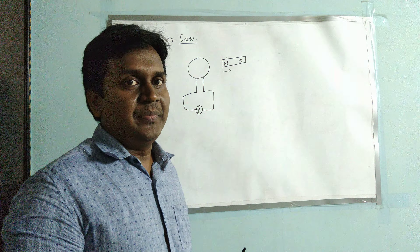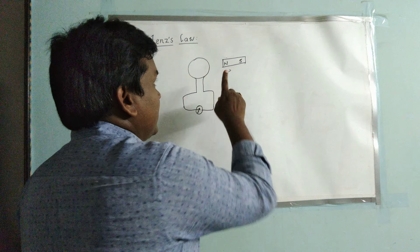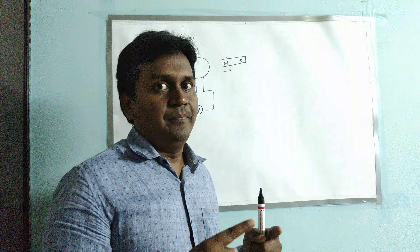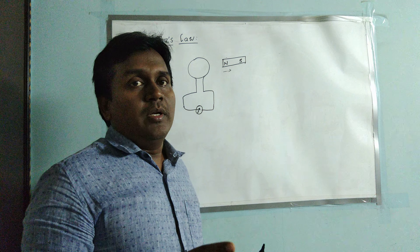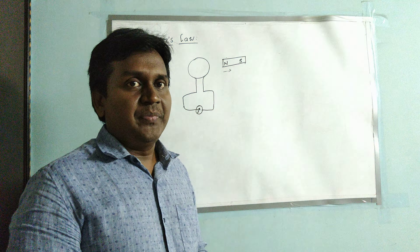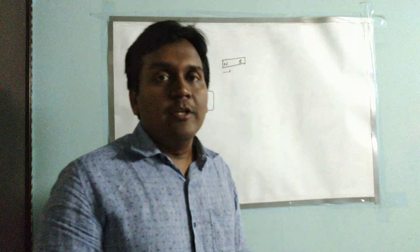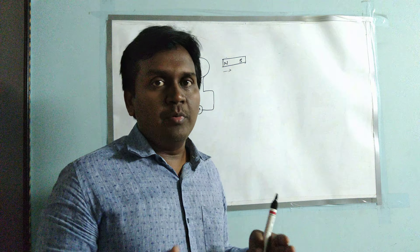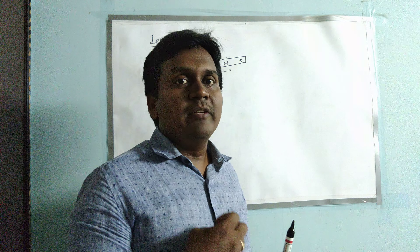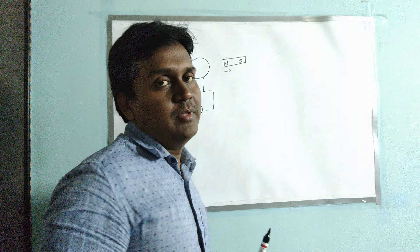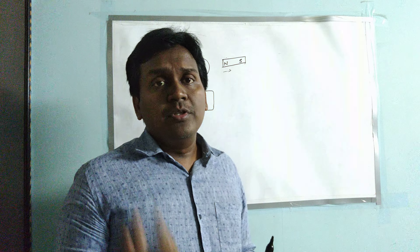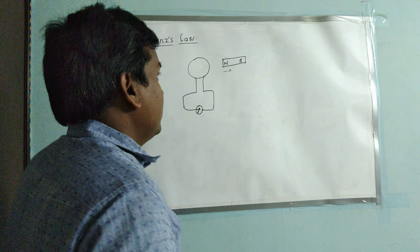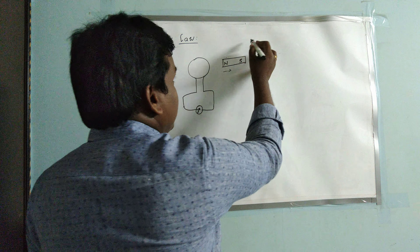If the bar magnet and coil are moving in opposite directions, there will be some induced current in the coil. Definitely there should be some motion in opposite directions — only then will there be a change in the field lines of the bar magnet, and an induced current will be produced in the coil. Now let us consider a few situations.